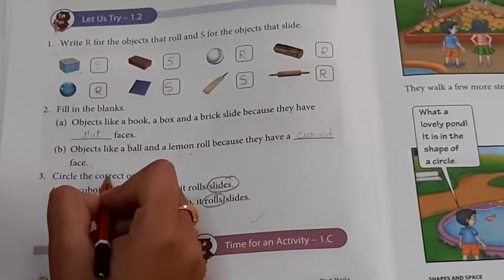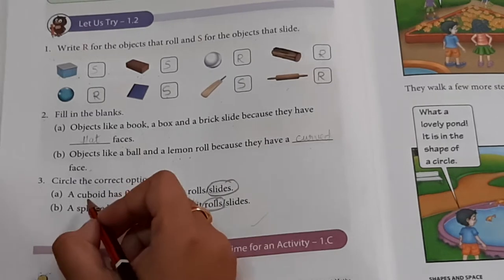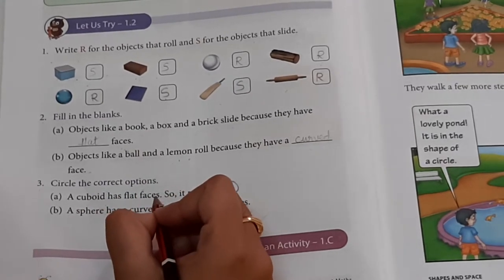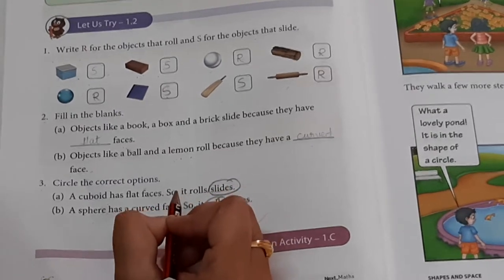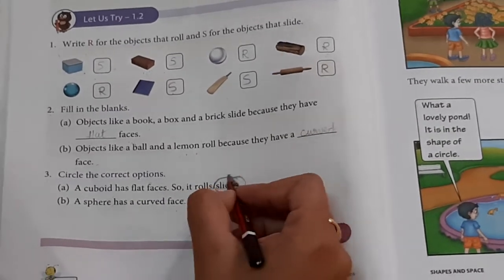Circle the correct options. A cuboid has flat faces so it rolls or slides, children. Yes, you guessed it right. It slides.